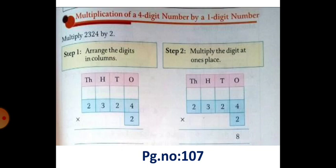Step 1: Arrange the digits in columns. So children, you have to arrange the numbers in columns with place values. So 2324 multiply by 2.